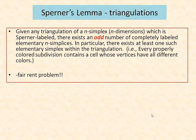We are discussing Sperner's lemma and its triangulations. Sperner's lemma states that given any triangulation of an n-simplex, which is n-dimensional and Sperner-labeled, there exists an odd number of completely labeled elementary n-simplices. In particular, there exists at least one such elementary simplex within a triangulation. Every properly colored subdivision contains a cell whose vertices have all different colors.